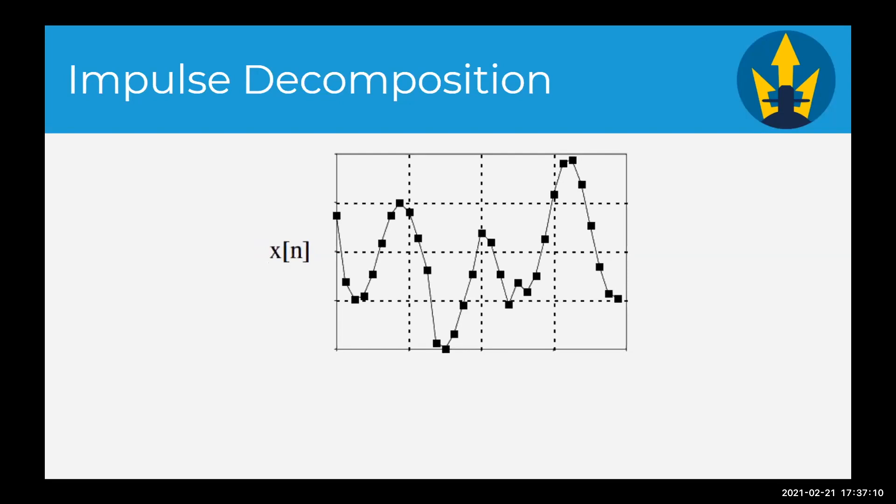Impulse decomposition is important because it allows signals to be examined one sample at a time. Using superposition, you just add all of the results together. Similarly, systems are characterized by how they respond to impulses. By knowing how a system responds to a single impulse, the system's output can be calculated for any given input. This approach is called convolution. Convolution is the mathematical framework for all of DSP, and it's the most important technique of DSP.